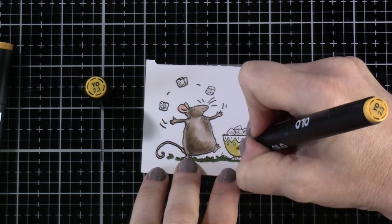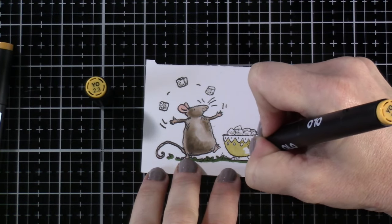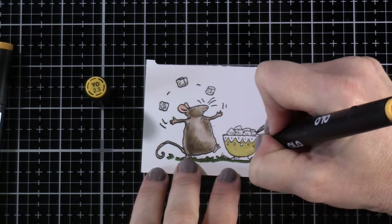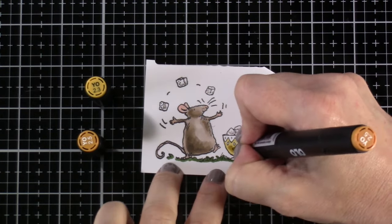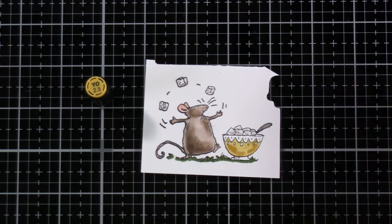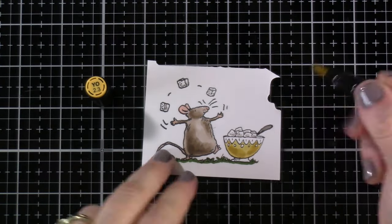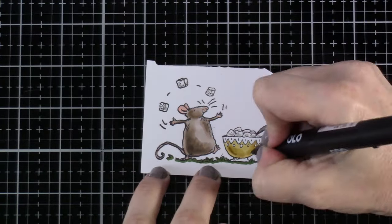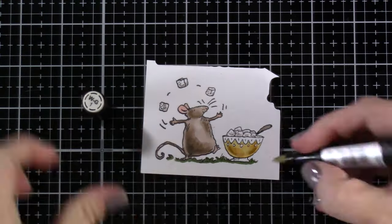Now we have our Y02.3 coloring that little bowl of sugar. How cute is this little mouse? I don't know what it is about these Anita Jerem images. They're just darling. I want them all. I don't have that many but I definitely want them all. They're so cute.